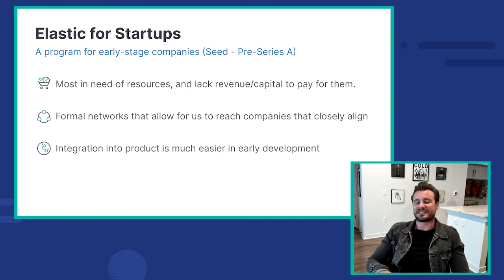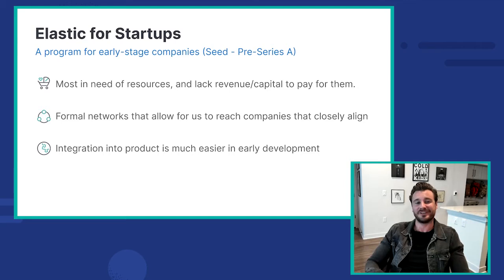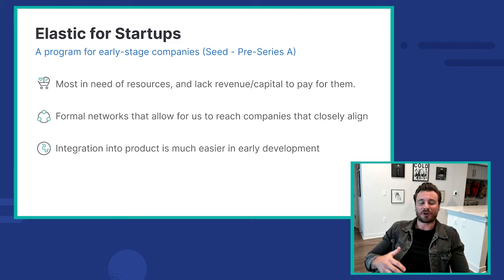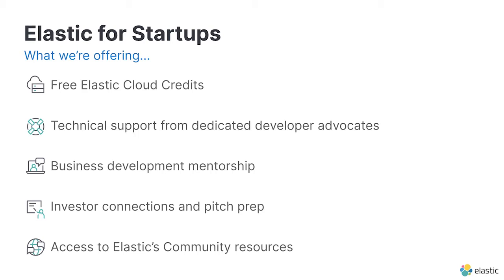This is the earliest stage where we start to see formal networks formed around startups that provide a support structure and influence success beyond what Elastic alone can provide. This allows us to come alongside as an ecosystem partner — another spoke on an existing wheel that provides added strength, rather than trying to recreate that wheel altogether. We're also looking for opportunities to integrate new technology into a broader solution, and at this stage adoption of an Elastic offering is relatively frictionless.